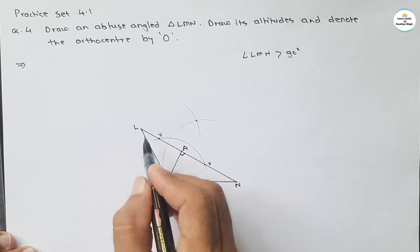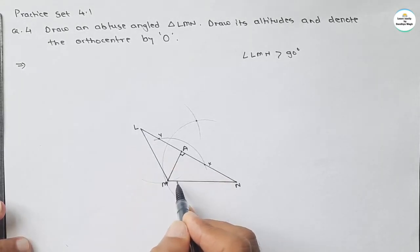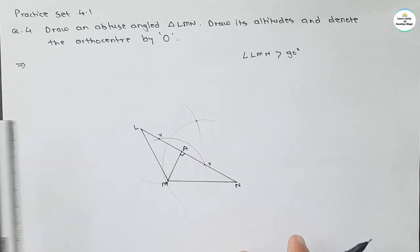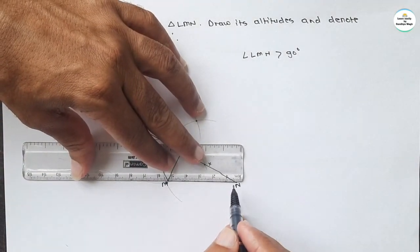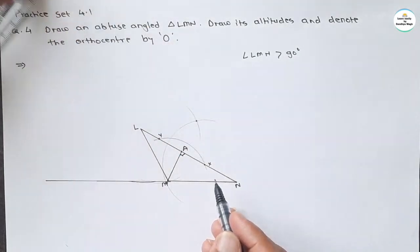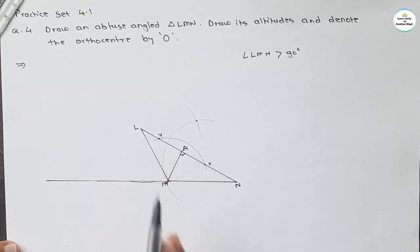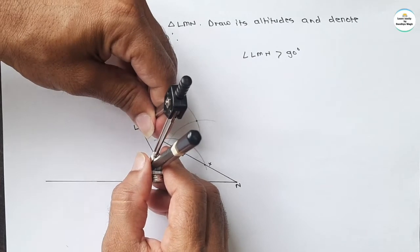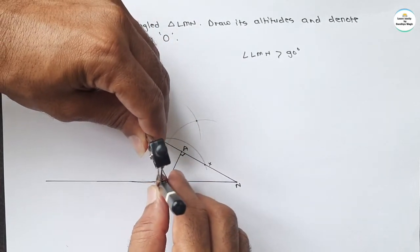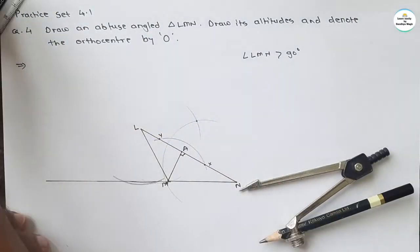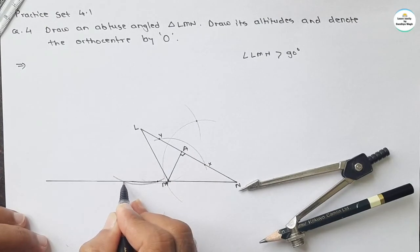As this is an obtuse angle, the altitude from L will lie on the outside of the triangle. So we need to extend this line. Then take the compass and cut the opposite side by taking center L with sufficient radius, cutting two distinct points — one point here and one point here.